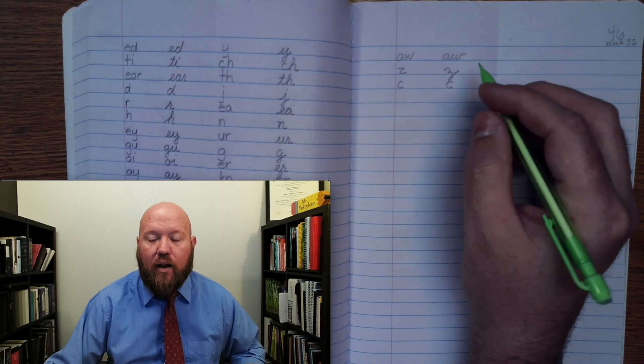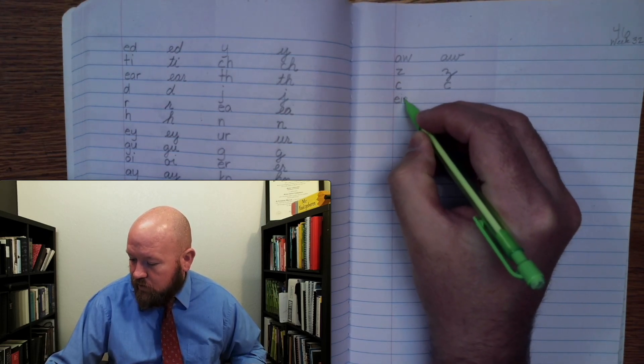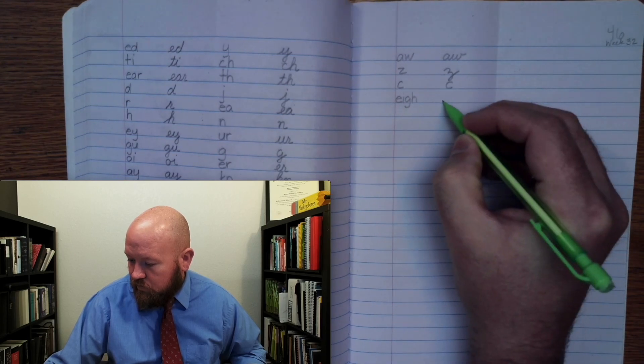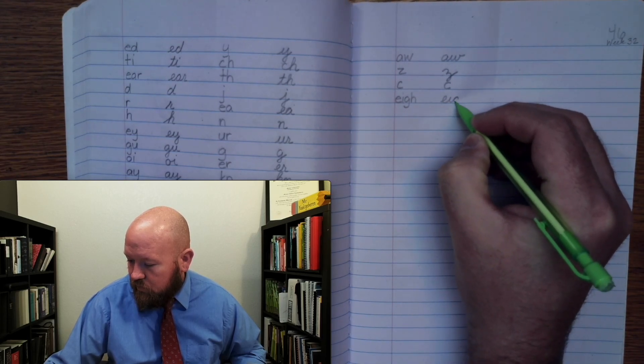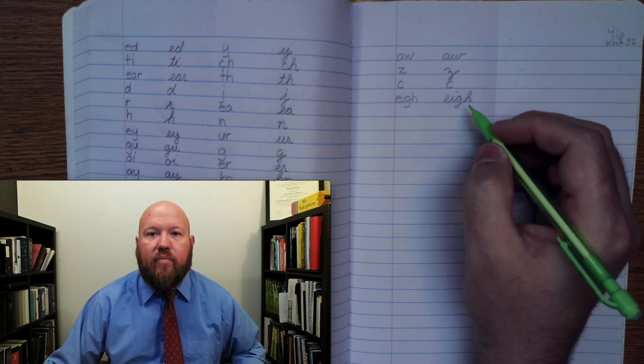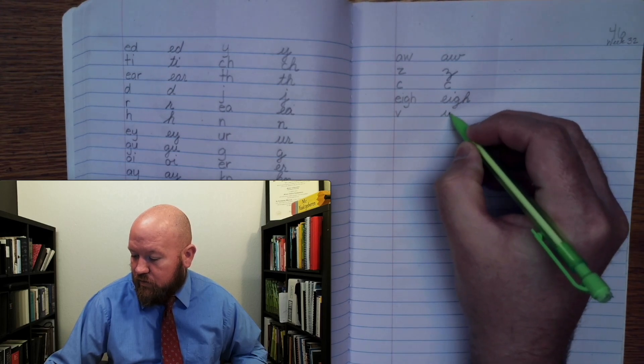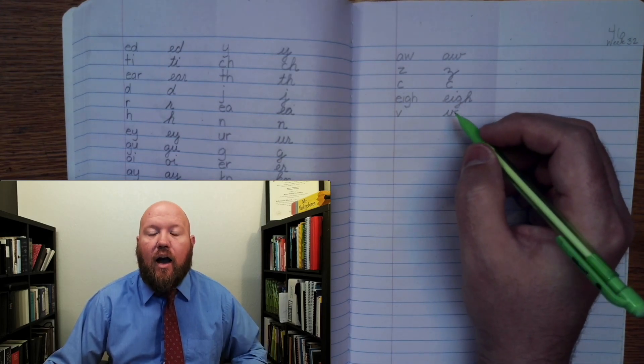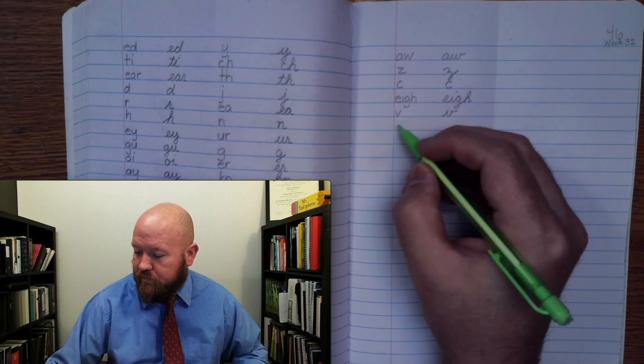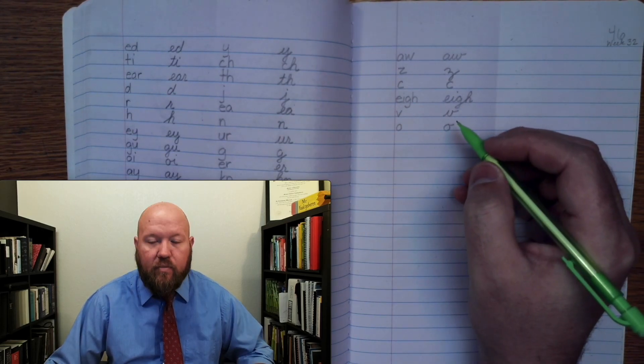Next one. A, four letters. A, four letters. Next one. V. V. V. Next one. Ah, O, U. Ah, O, U.